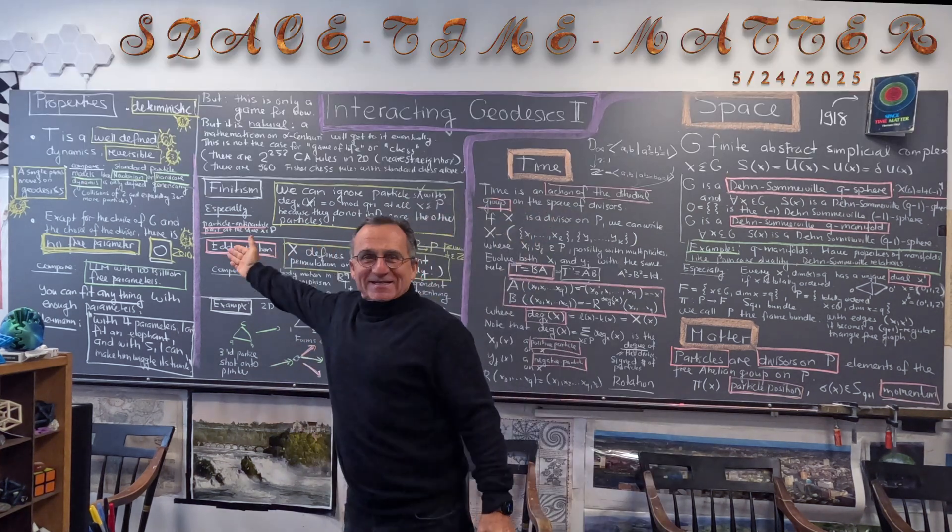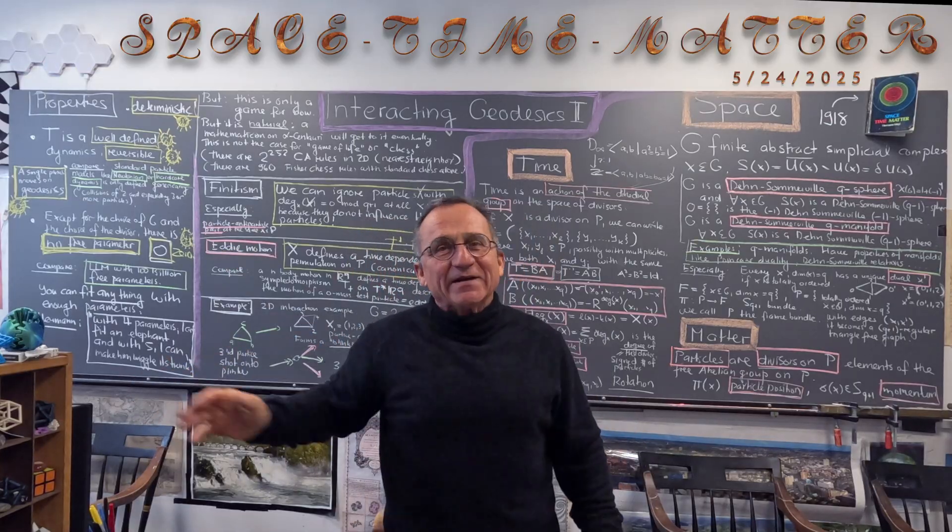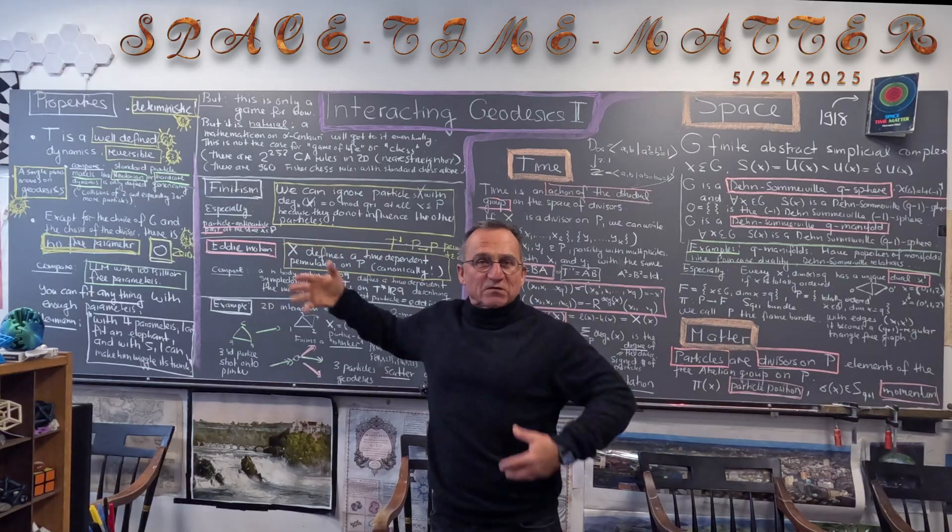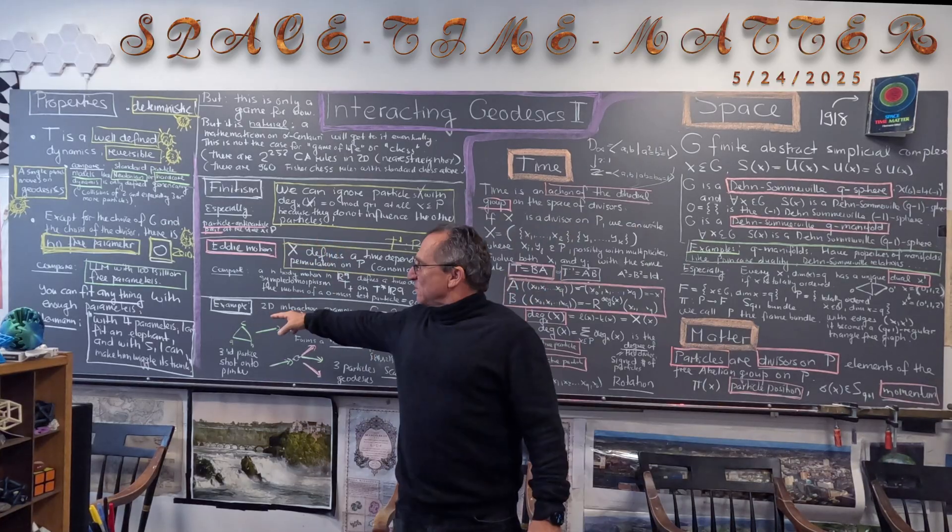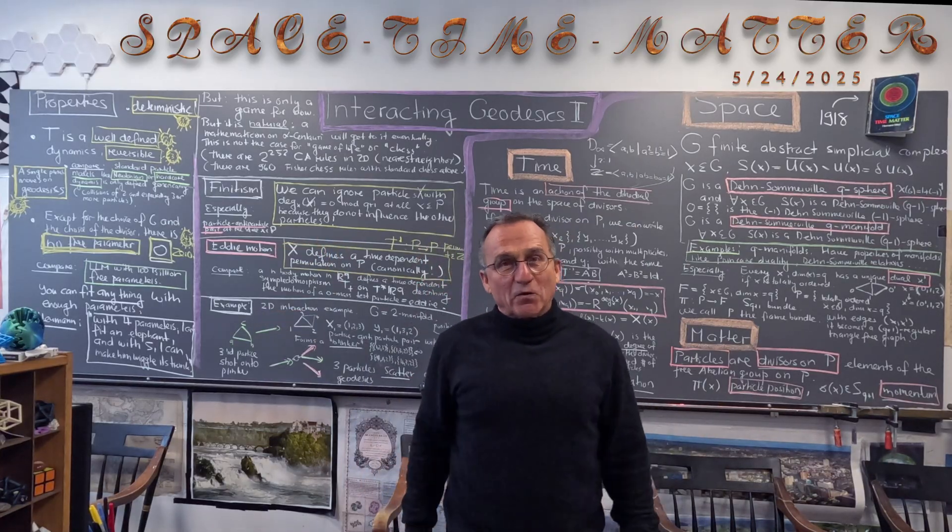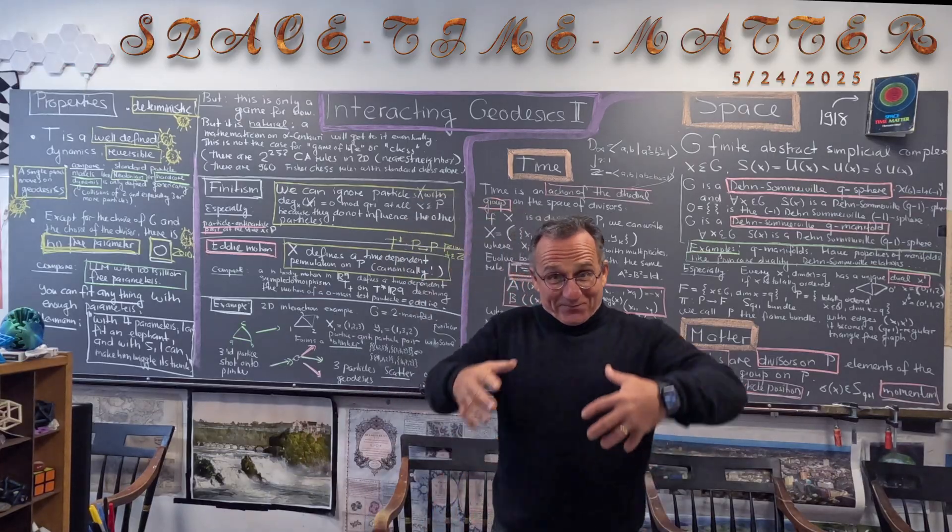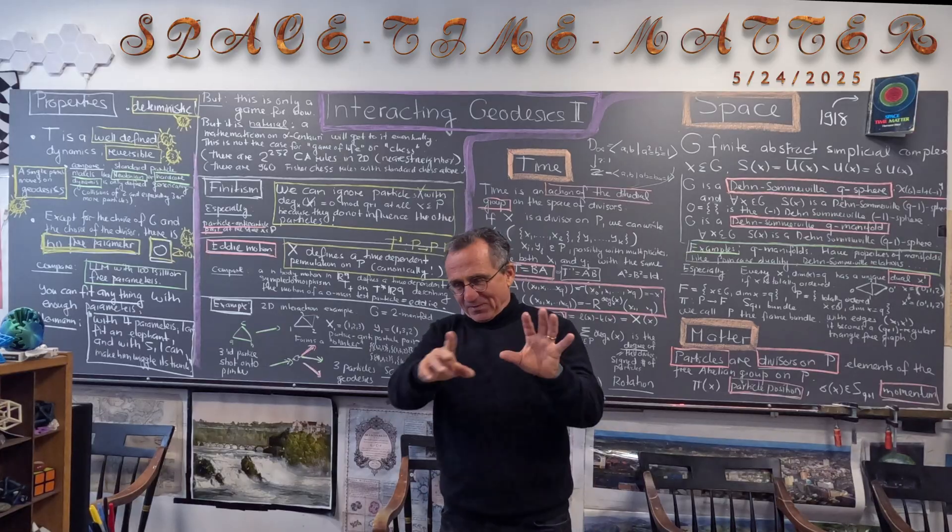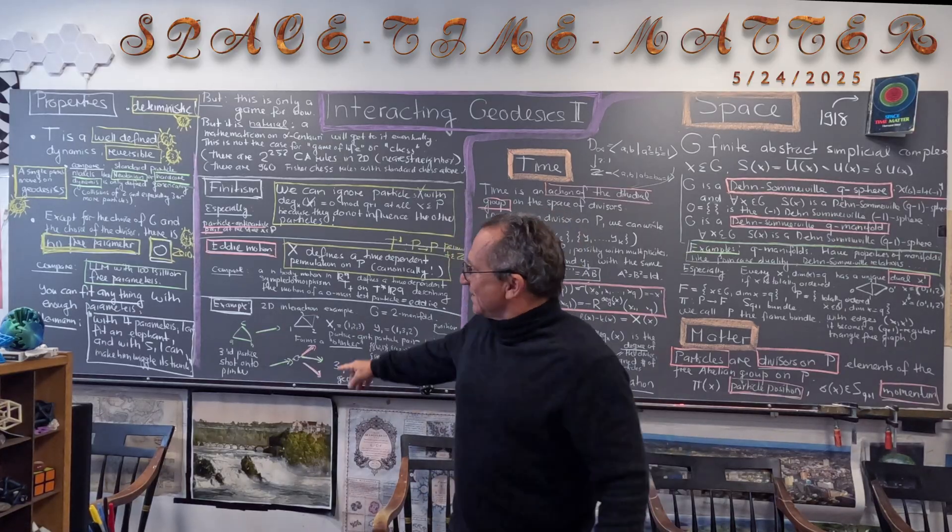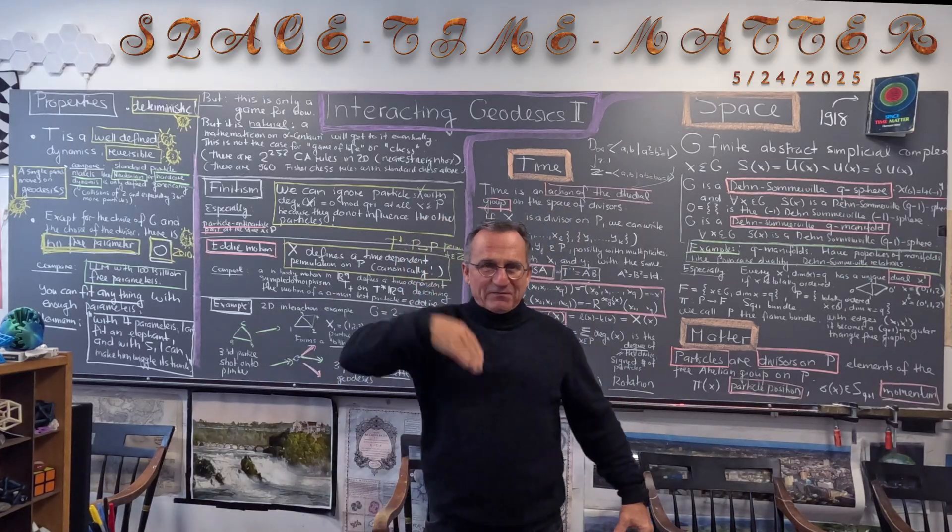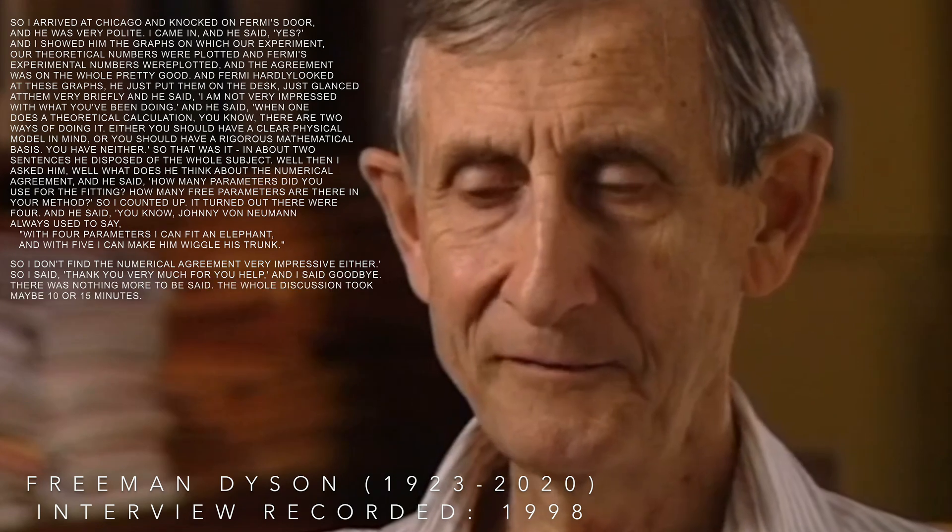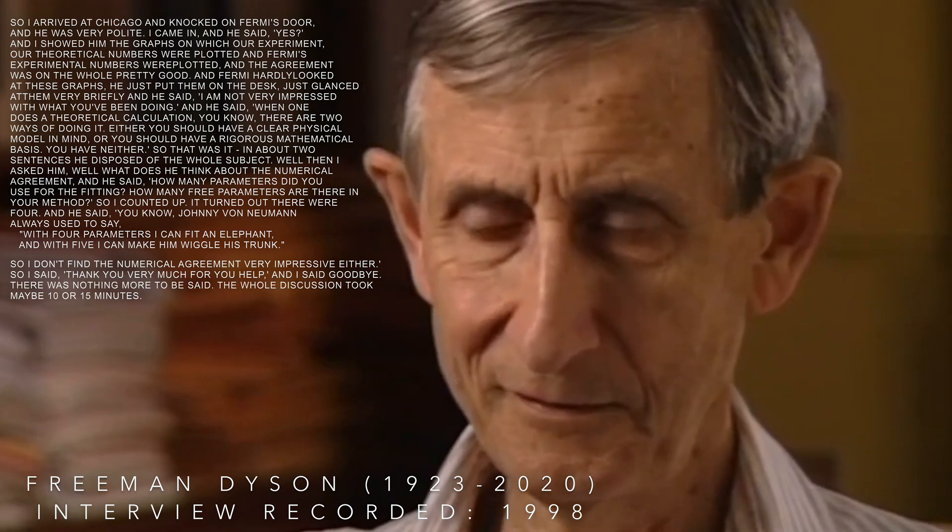Just also zero parameters is kind of the opposite of what we are doing with AI. AI has usually kind of now hundreds of billions of weights of parameters. What von Neumann already knew that with four parameters you can fit an elephant. Indeed, you can actually with four parameters kind of draw the shape of an elephant and with five parameters you can even have it wiggle its trunk. How many parameters did you use for the fit? How many free parameters are there in your method?